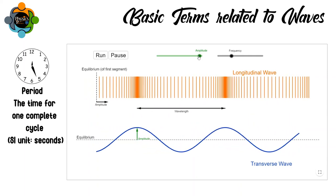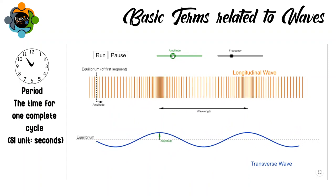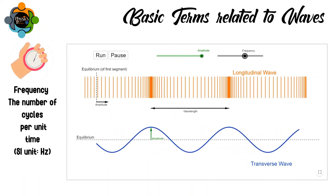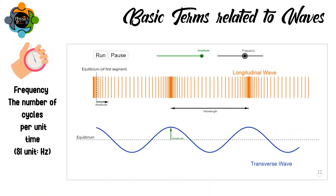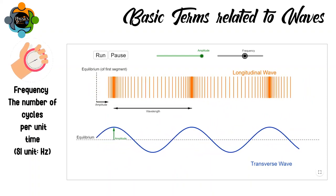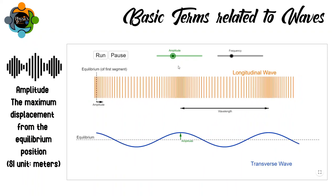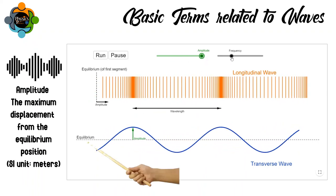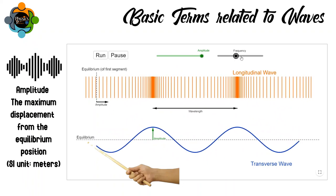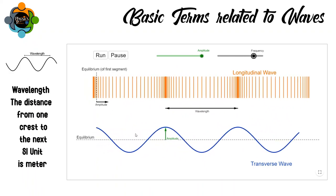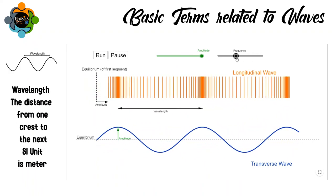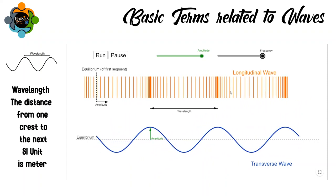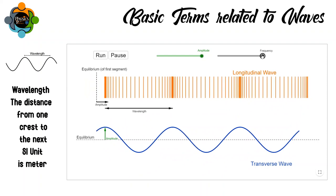Let's recall some basic wave terms. Period is the total time taken for one complete cycle. Frequency is the number of cycles per unit time — for example, cycles per second, measured in hertz. Amplitude is the maximum displacement from the equilibrium position, shown as the reference line on screen. Wavelength is the distance from one crest to the next, or between two adjacent points in the same phase of motion.